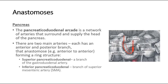For the pancreas, the pancreaticoduodenal arcade is a network of arteries that surround and supply the head of the pancreas. There are two main arteries, each with an anterior and posterior branch that anastomose forming a ring structure. The superior pancreaticoduodenal is a branch of the gastroduodenal artery, and the inferior pancreaticoduodenal is a branch of the superior mesenteric artery.